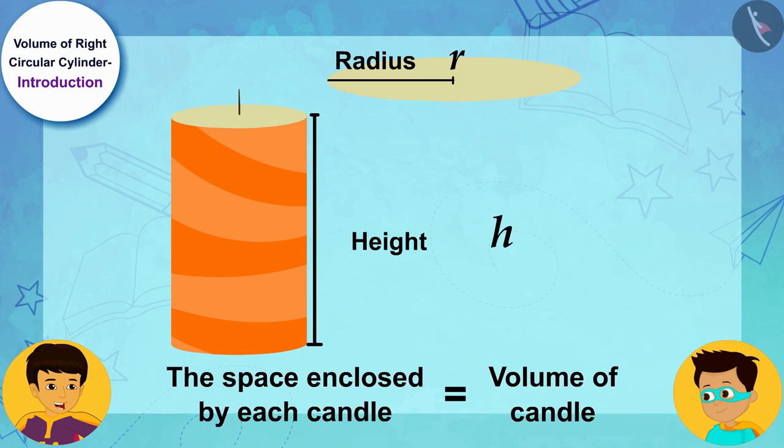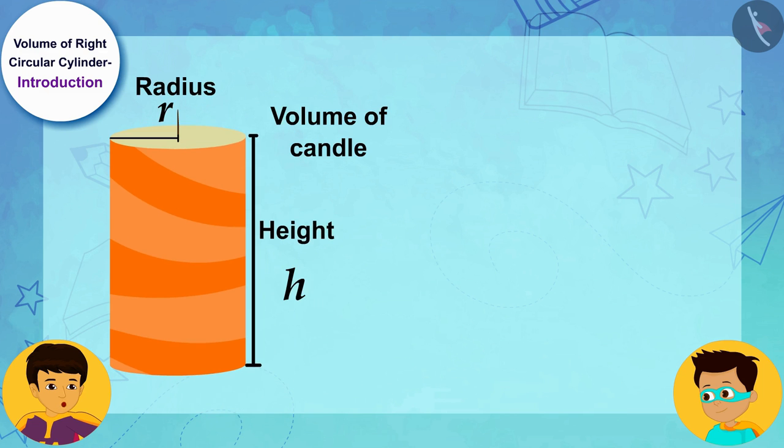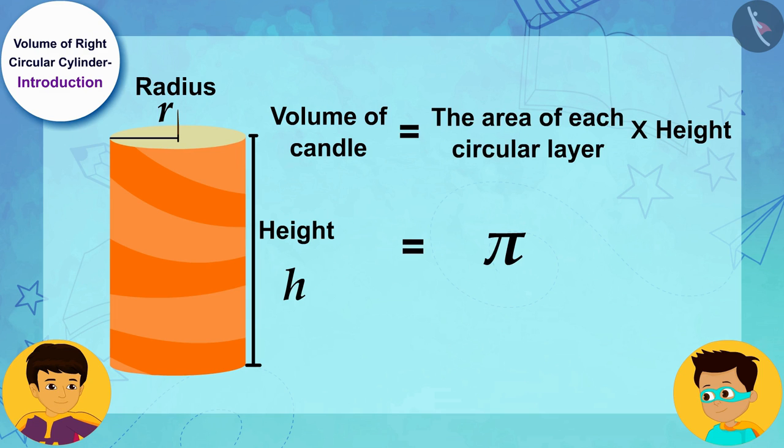The space enclosed by each candle, that is its volume, will be equal to the area of each circular layer multiplied by its height. The area of each layer is equal to πr², and here the height...